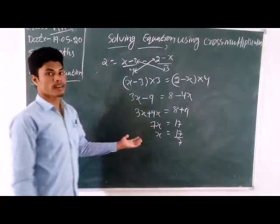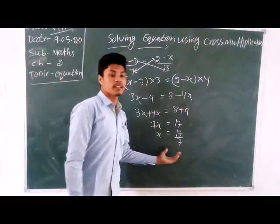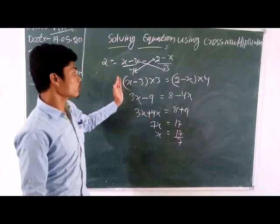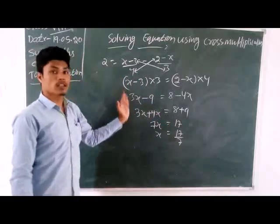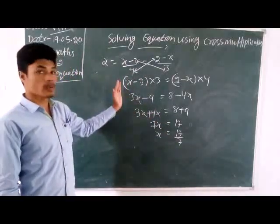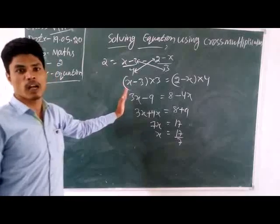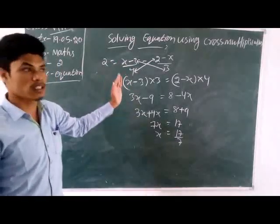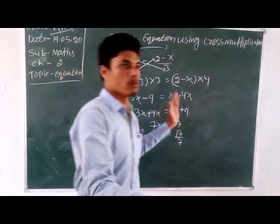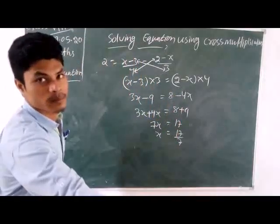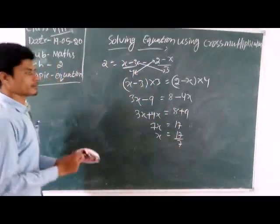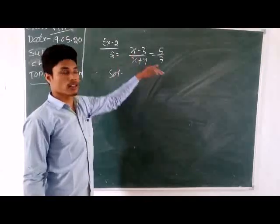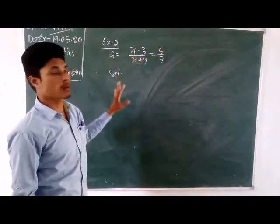x equals 17/7. We can easily find the answer. If you do the steps step by step, you never have to write a long answer. All of you properly understood how to do the cross multiplication process. Now we take another example using cross multiplication and solve the equation.